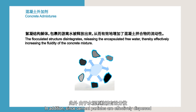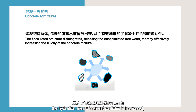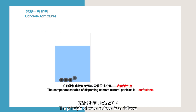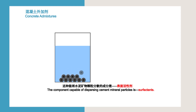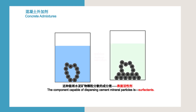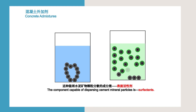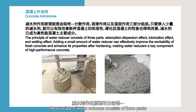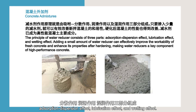In addition, since cement particles are effectively dispersed and the particle surfaces are sufficiently wetted by water, the hydration area of cement particles is increased, ensuring more complete hydration and thus improving the strength of concrete. The principle of water reducers consists of three parts: adsorption dispersion effect, lubrication effect, and wetting effect.